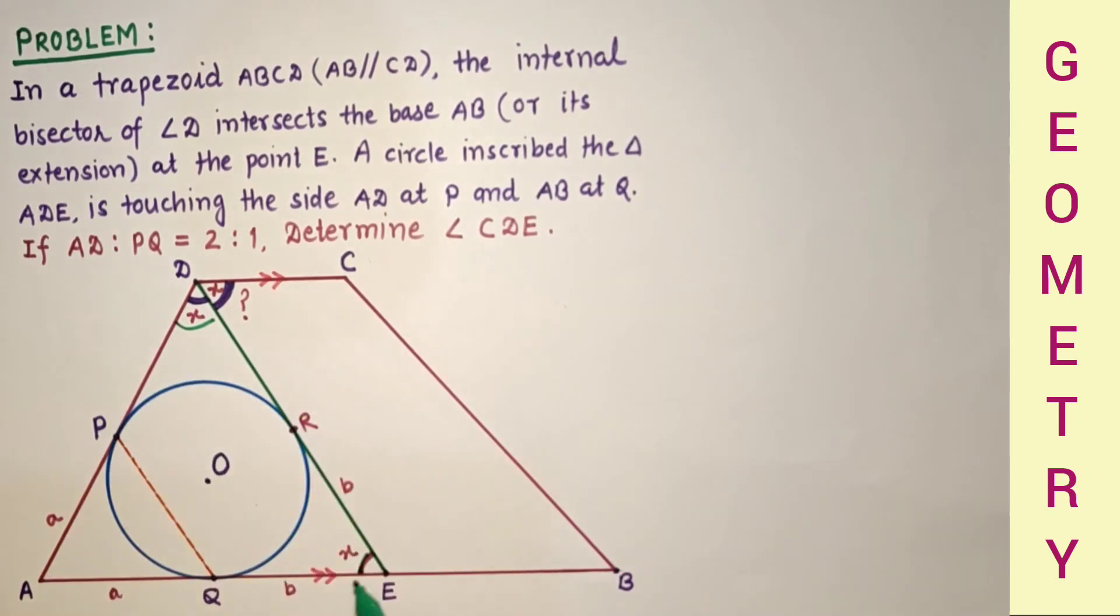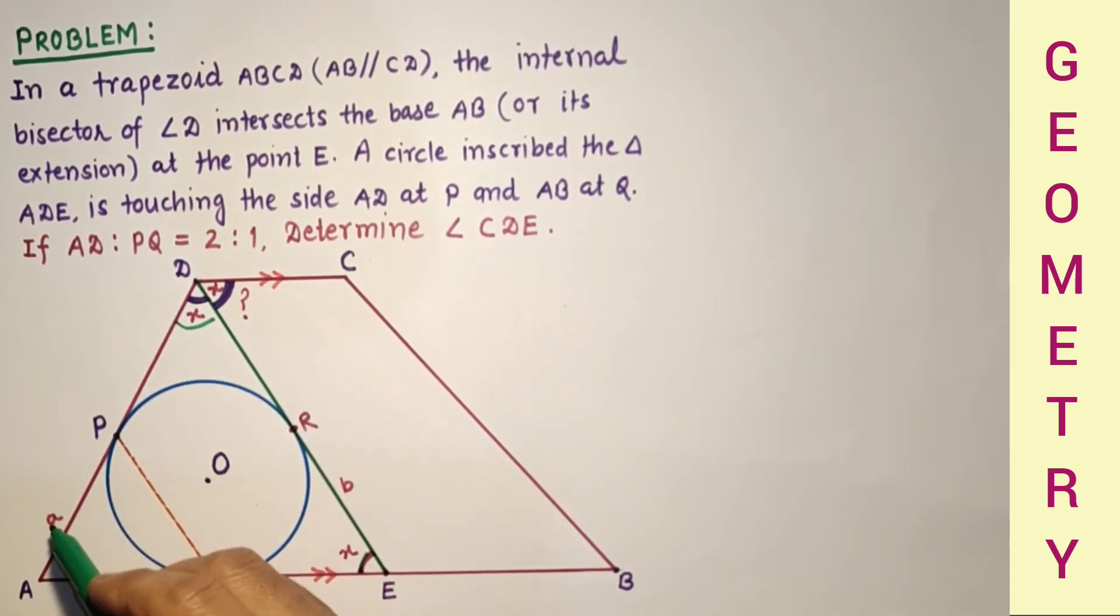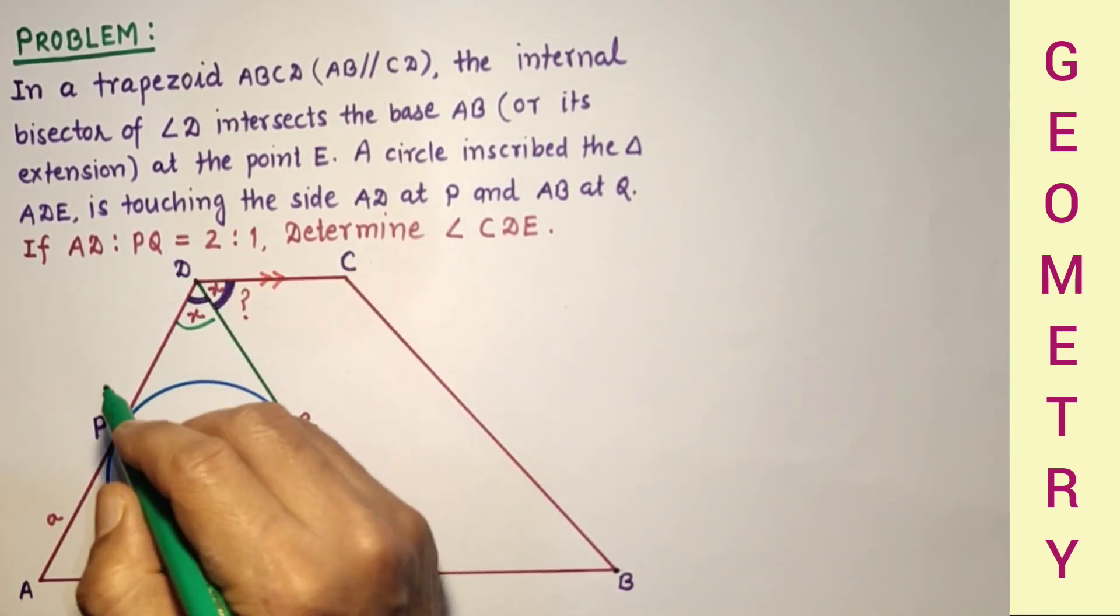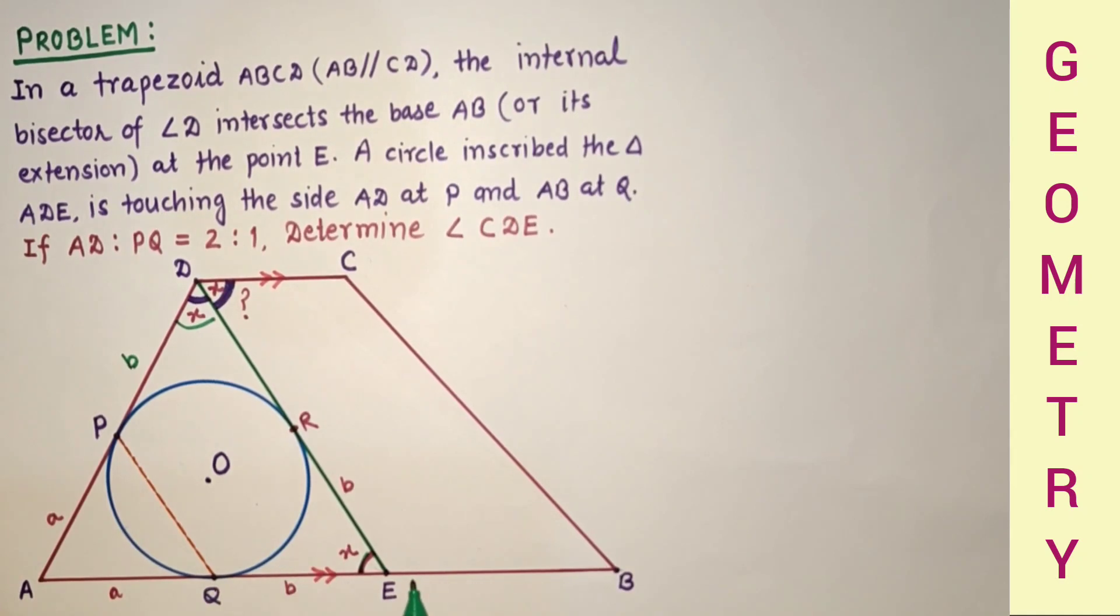In triangle ADE, these two angles are equal. Since these two angles are equal, these two sides AD and AE will also be equal. It's an isosceles triangle. But AE is equal to A plus B. Since AE equals AD and AP is A, therefore PD will also be B.